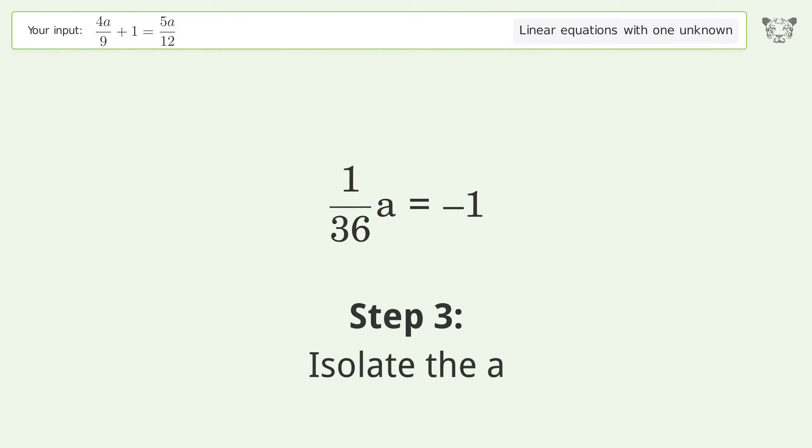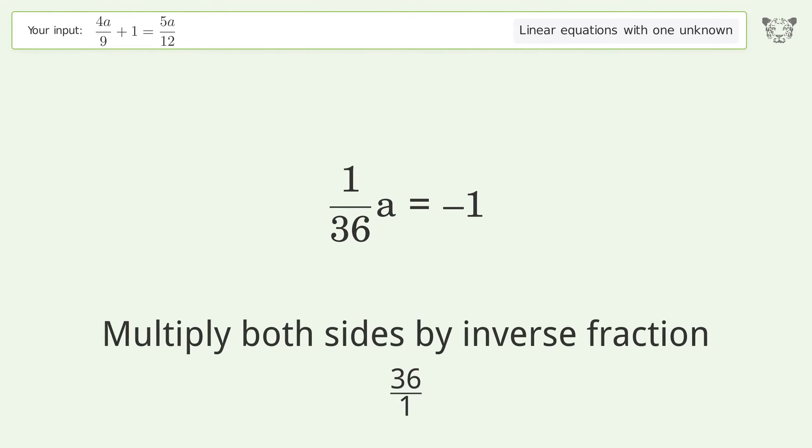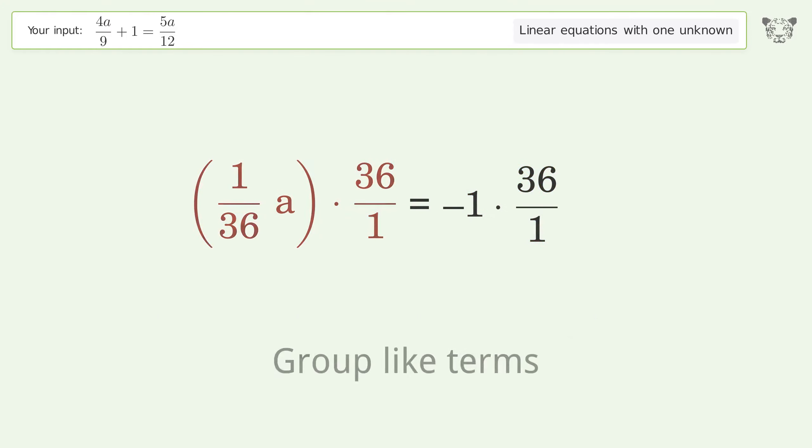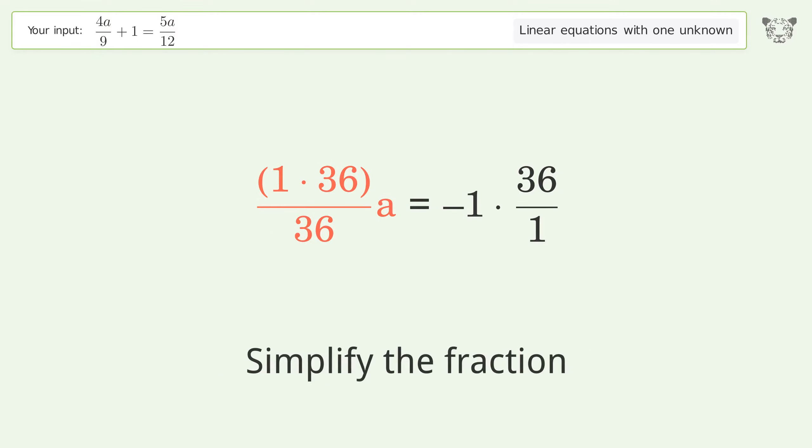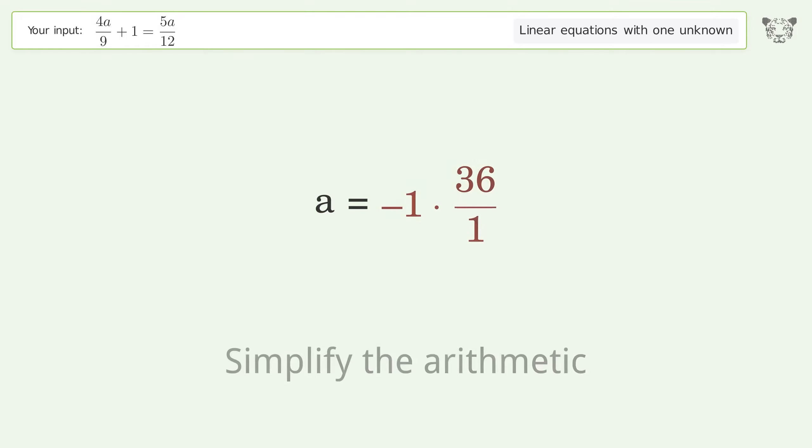Isolate the a. Multiply both sides by inverse fraction 36 over 1. Group like terms. Multiply the coefficients. Simplify the fraction. Simplify the arithmetic.